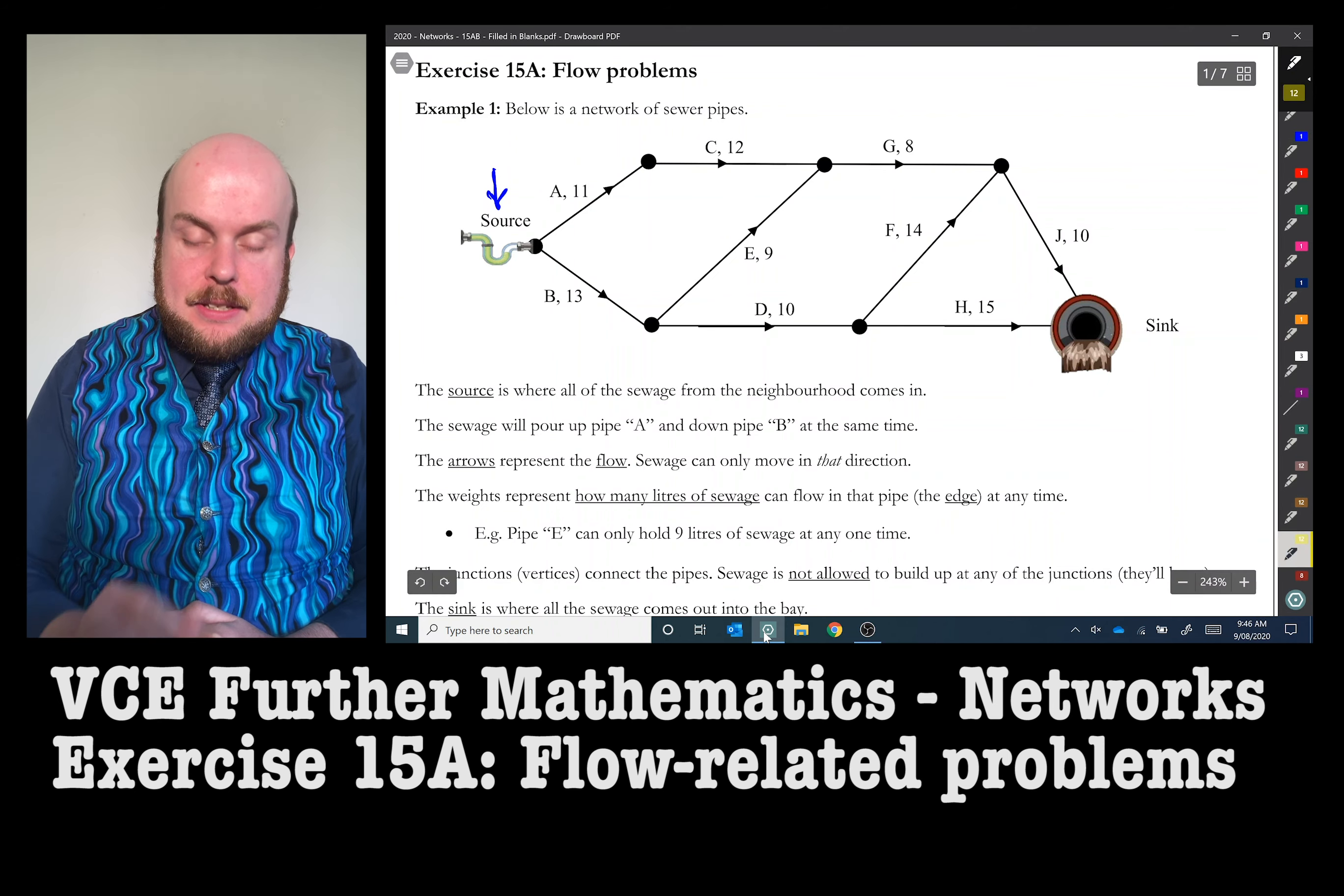The sink is where all the sewage comes out into the bay. What is the maximum amount of sewage or the maximum flow that can flow through at any one time such that none of the junctions burst? Flow diagrams always have a starting vertex and an ending vertex, a source and a sink. And there are several different ways we can solve this particular question.